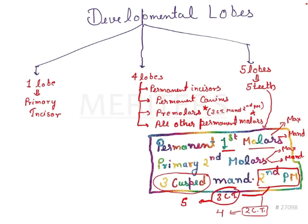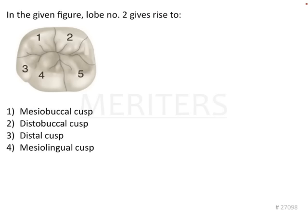So this is how we remember the five lobes, five teeth concept: permanent first molars arise from five lobes whether maxillary or mandibular, and primary second molars arise from five lobes whether mandibular or maxillary. Now coming back to the question — in the given figure we can see the buccal aspect, mesial aspect, distal aspect, and lingual aspect.